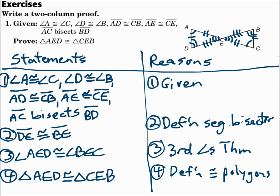Try to get all the pairs of angles congruent and all the pairs of sides congruent. Look for extra information they give you — like the segment bisector, which gave us two congruent segments — and then the third angles theorem, which gave us that third pair of angles. Once you have enough, the triangles are congruent.